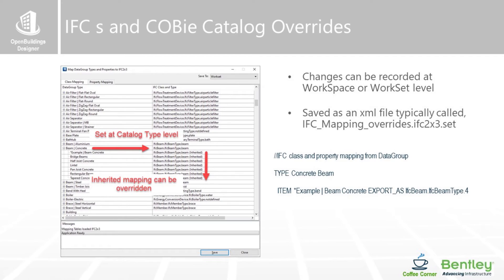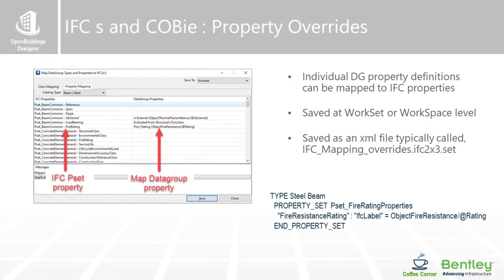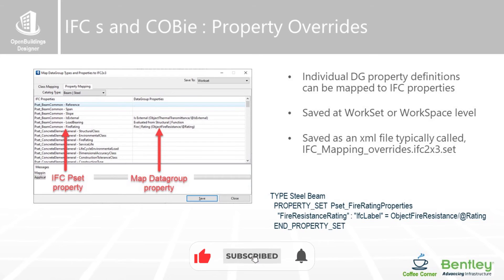Out of the box, everything within a catalog inherits the parent definition — you can see that on the dialog box on the left-hand side. However, we can override that using this dialog box, so an individual beam might go out as a very specific IFC beam type. We give you that level of granularity, and we also do that for individual properties.